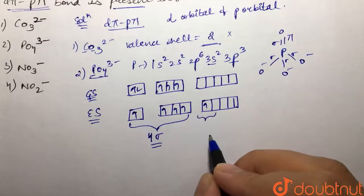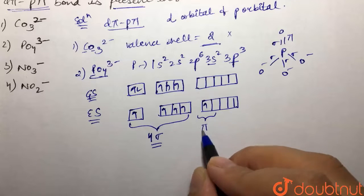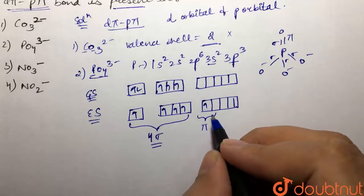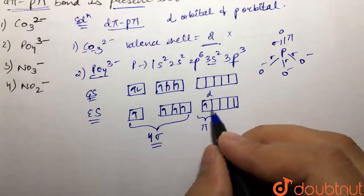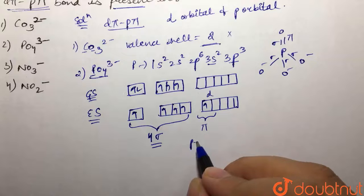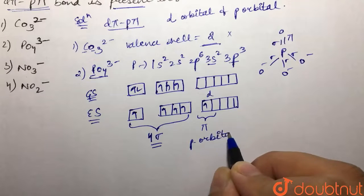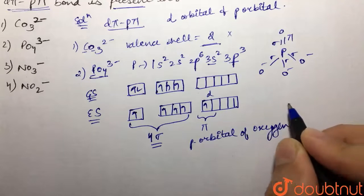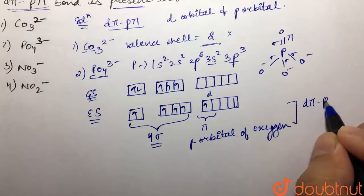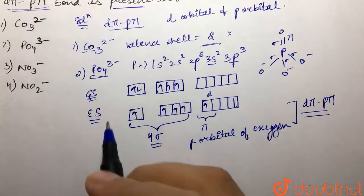This pi bond formed is formed between the d orbital of the phosphorus—this is d orbital, d orbital of the phosphorus—and the p orbital of oxygen. So this would be a d-pi p-pi bond. There is presence of a d-pi p-pi bond, so this is our correct option.